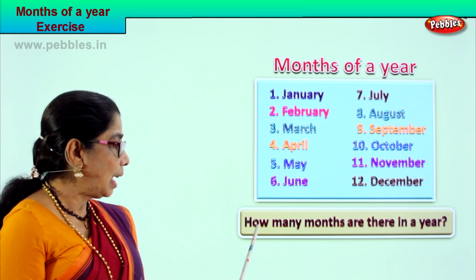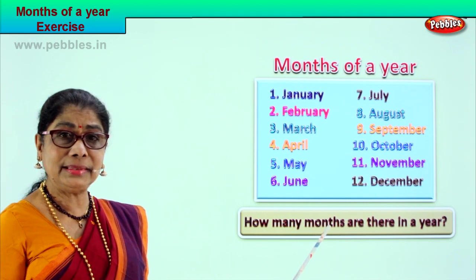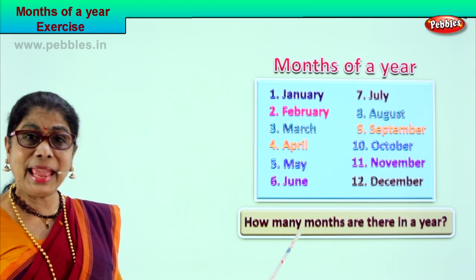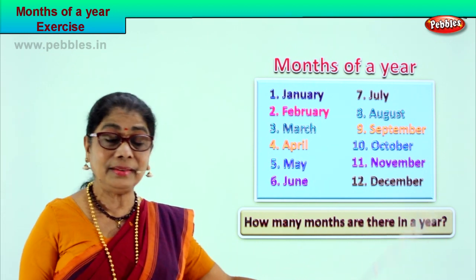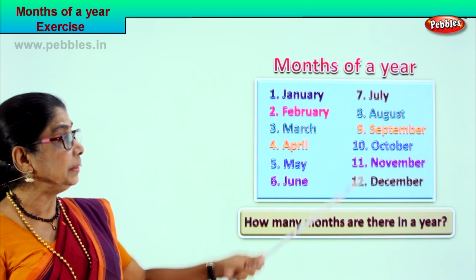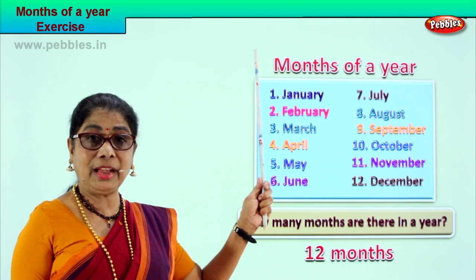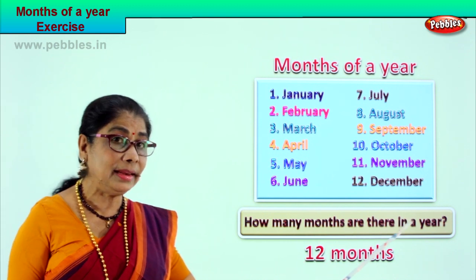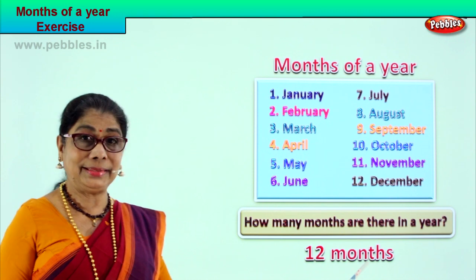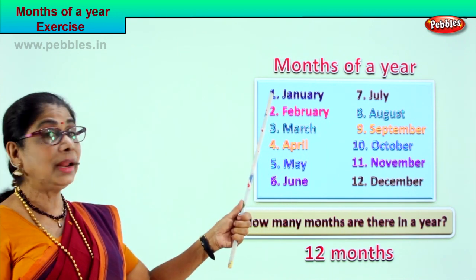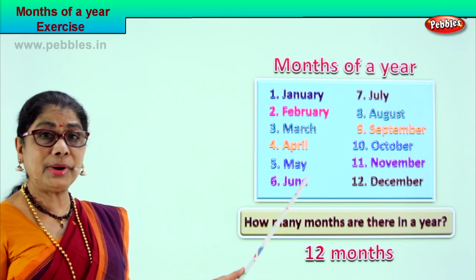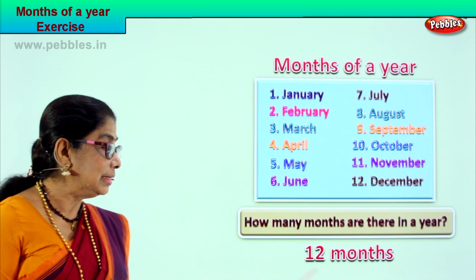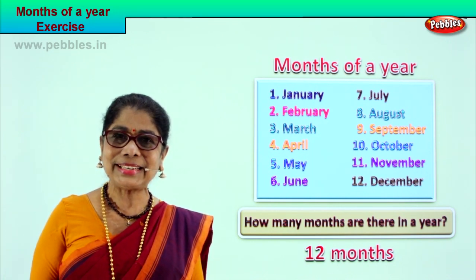Okay, let's read together. How many months are there in a year? Look at the chart. How many months are there in a year? There are 12 months in a year — from 1 to 12. So how many months are there in a year? There are 12 months. All 12 months are there: January, February, March, April, May, June, July, August, September, October, November, and December. 12 months in a year. Very good!